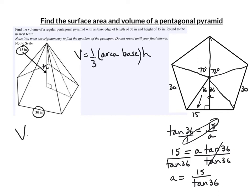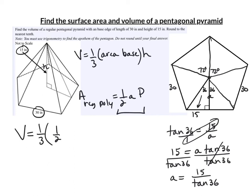Now we can find the volume. The volume is one-third times the area of the base times the height. The base is a pentagon, so its area is one-half the apothem times the perimeter. The perimeter is 30 times 5, which is 150. The height of the pyramid is 15.